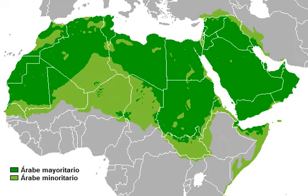Charles Ferguson's koine theory claims that the modern Arabic dialects collectively descend from a single military koine that sprang up during the Islamic conquests. This view has been challenged; Ahmad al-Jalid proposes that there were at least two considerably distinct types of Arabic on the eve of the conquests, Northern and Central. The modern dialects emerged from a new contact situation following the conquests, containing several sedimentary layers of borrowed and areal features. According to Versteegh and Bickerton, colloquial Arabic dialects arose from pidginized Arabic formed from contact between Arabs and conquered peoples.